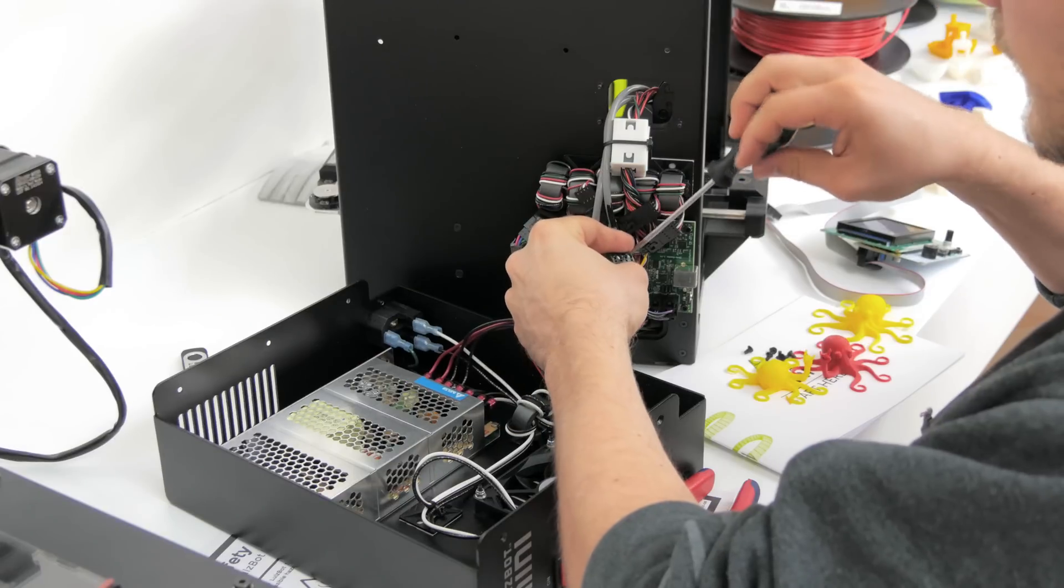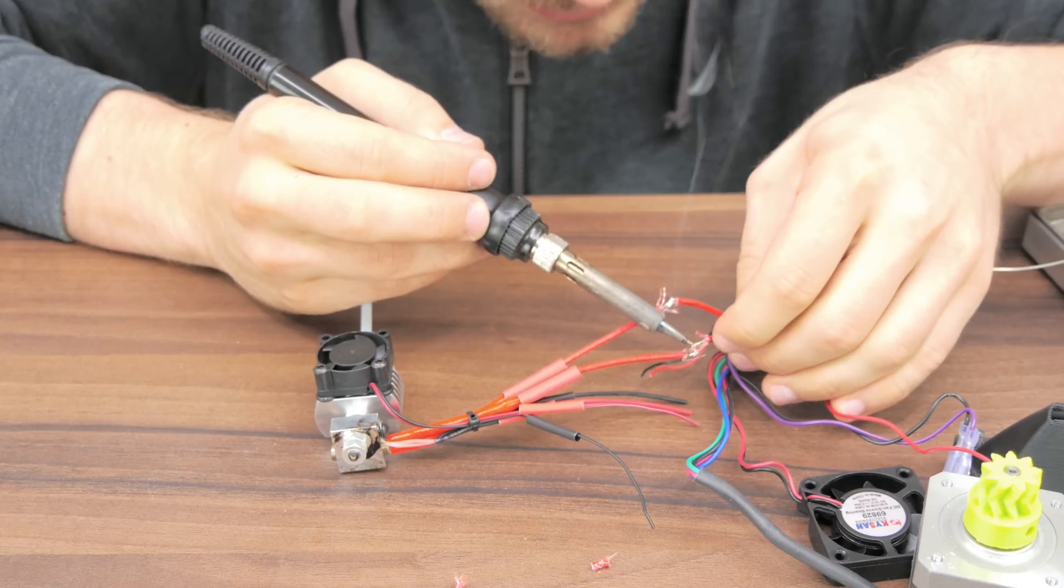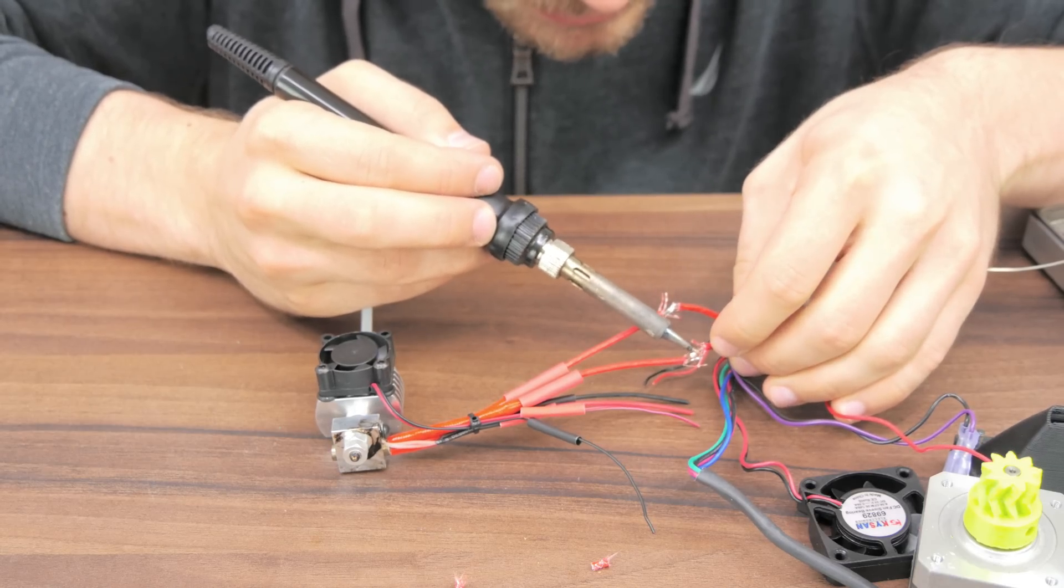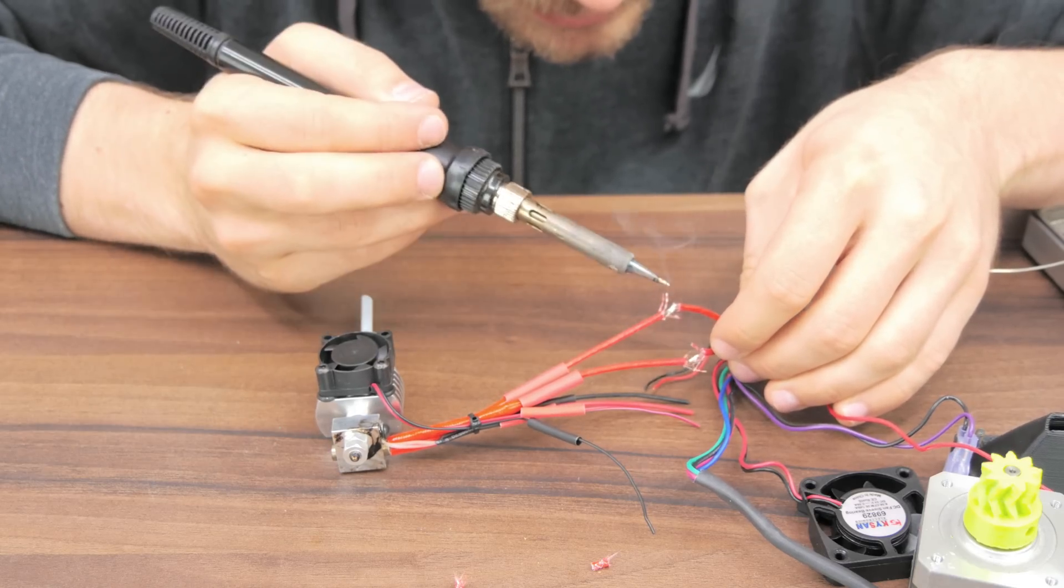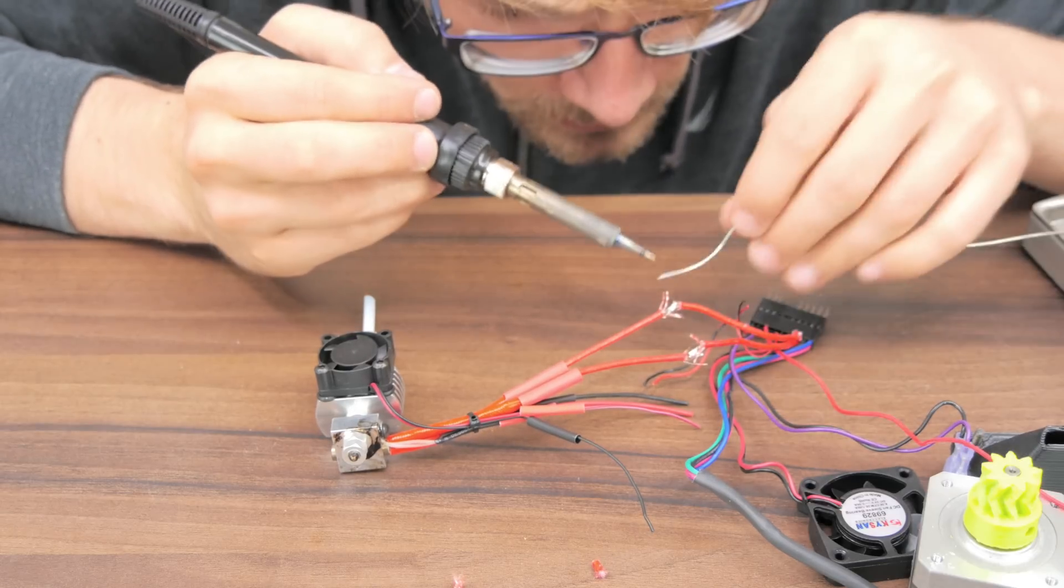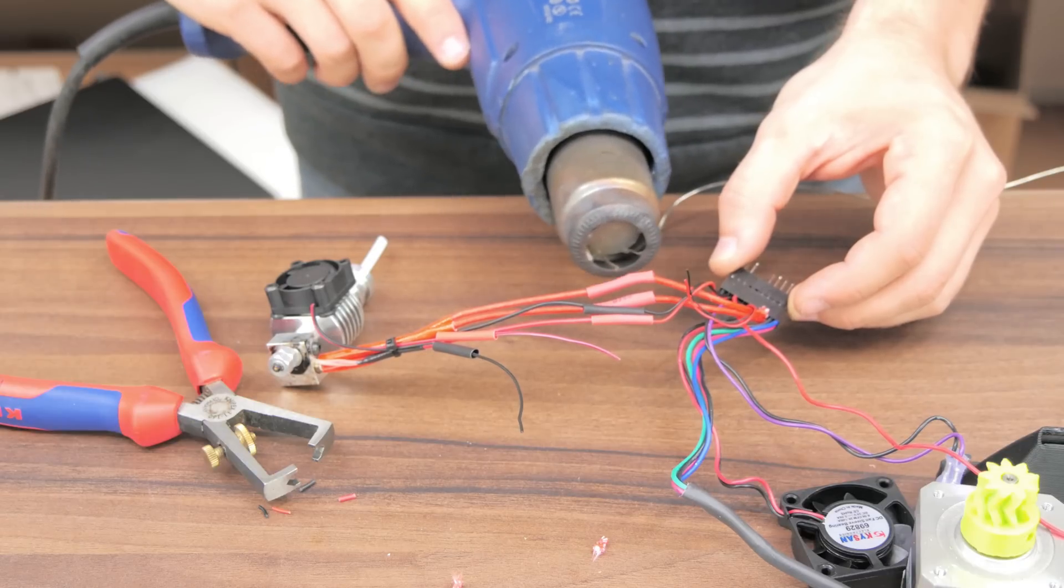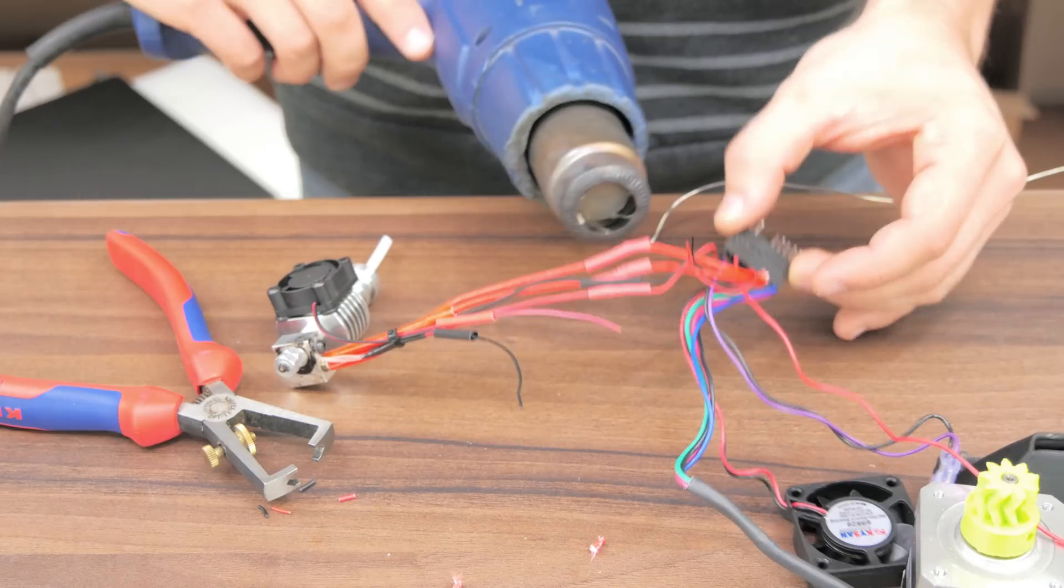In my case I'm swapping out the Lulzbot-specific hexagon hotend with the Prometheus, which share the same thermistor but use different voltages, for example for the fan, so it's a bit more work than just a one to one wire rerouting.